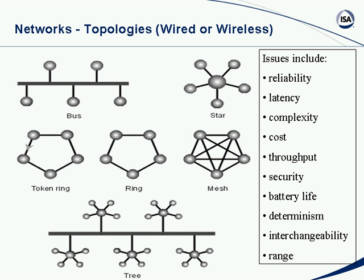Interchangeability is another issue. In a star network, the end nodes are not the same as the host node, so they're not exactly interchangeable. In a full mesh or ring network, all nodes are created equal, which raises interchangeability issues when talking about network topology. Range can also be an issue — mesh networking is used a lot to increase overall range, stringing mesh nodes together to act as repeaters down the chain. All these issues are impacted by the topology.